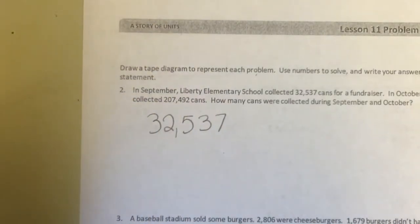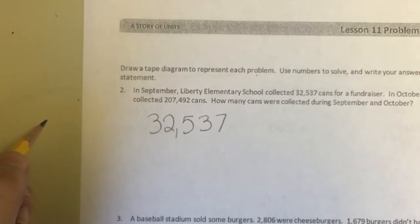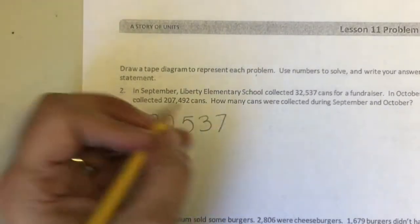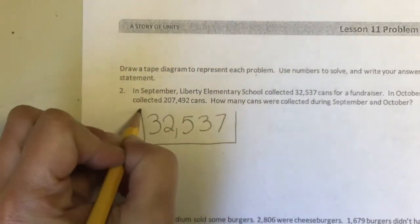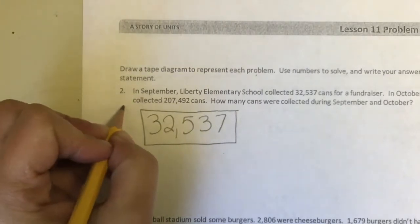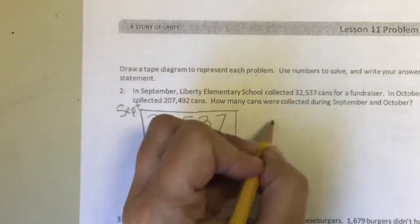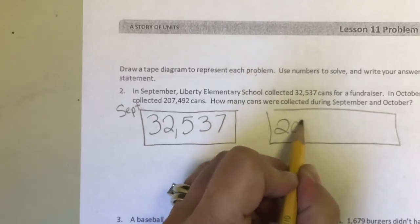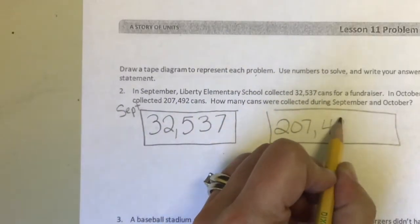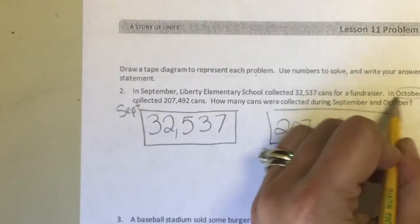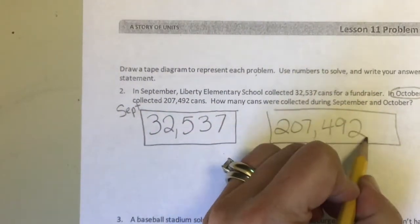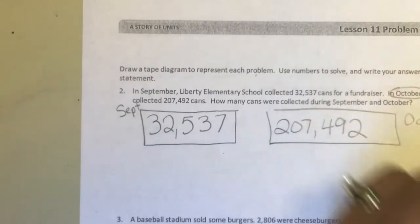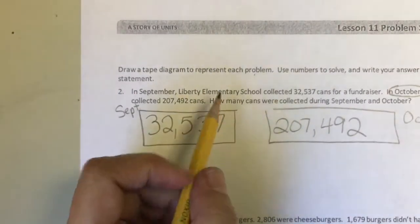In October they collected 207,492 cans. How many cans were collected during September and October? So this is going to be how many cans were collected in September, this is going to be how many cans were collected in October. This is October's number. So what am I going to do? Well I need to figure out how many cans were collected in September and October.